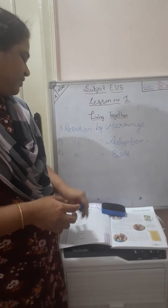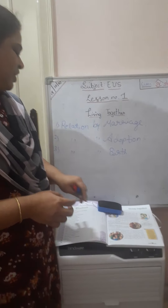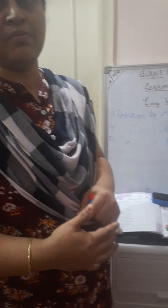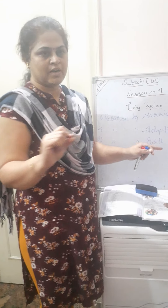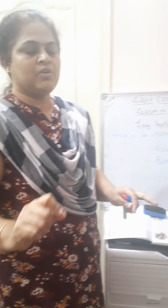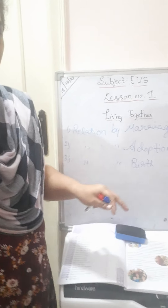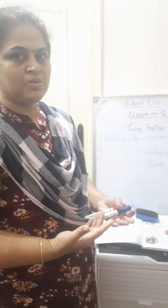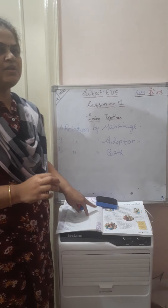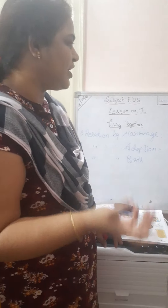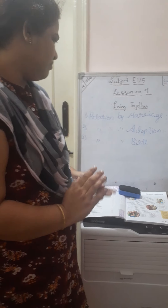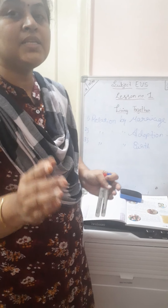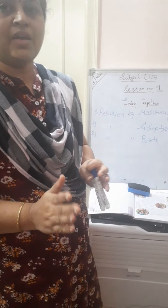Relation by adoption means some people will be there who are not having any child and they are going to adopt one child for them — through legally. Legally means they will write one document, and in that they are going to write that this baby we are going to take and we are the parents for him. That is through legally what we say as adoption. Relation by birth means when a mother gives birth to a child, the mother becomes a parent. That is the relation between mother and child.